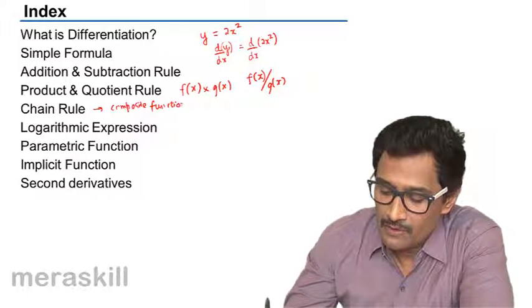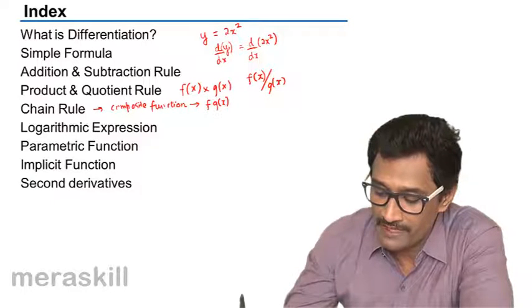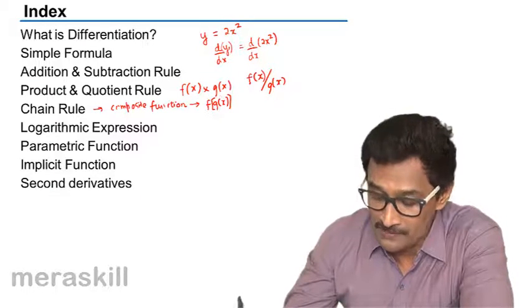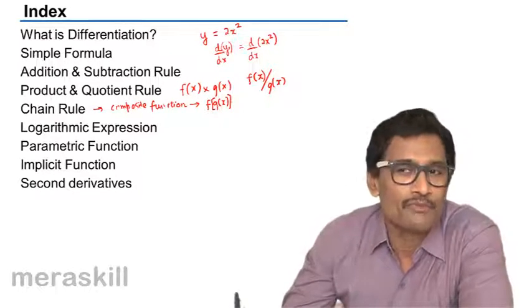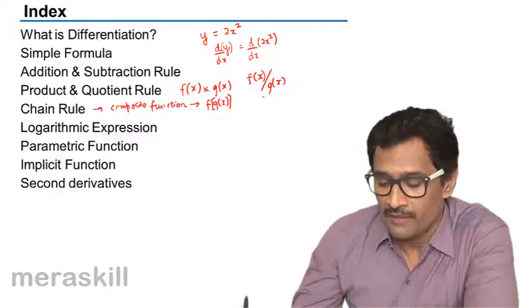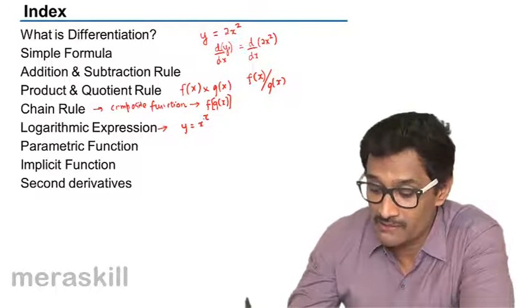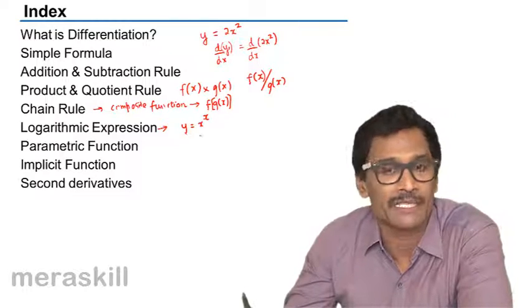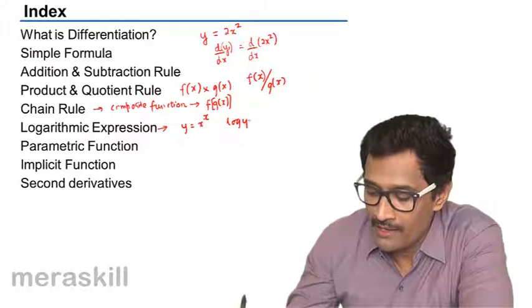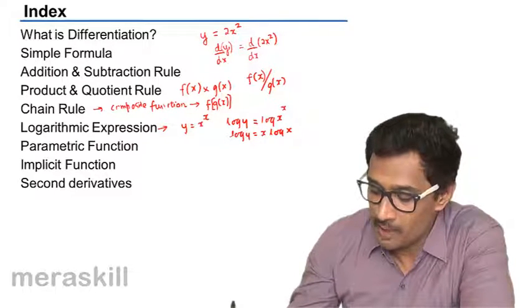The chain rule applies when you have a function within another function, that is f(g(x)). You first find the derivative of the outer function and then multiply it by the derivative of the inner function. Then there are logarithmic expressions. For example, if y = x^x, where both the base and exponent are variables, you take logarithm on both sides: log y = x log x, and then apply the product rule to differentiate.